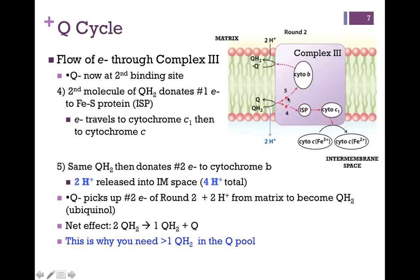The other electron, just as in the first case, will get passed to cytochrome B. So here's our fully oxidized Q. It would normally diffuse to the second Q binding site. However, that site is already occupied by the semiquinone. So the semiquinone will pick up the electron that was just donated to cytochrome B.